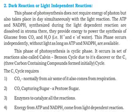The dark reaction phase occurs at the same time as the light-dependent reaction, because it does not need energy of photons directly — plants already captured sunlight in the first phase. The ATP and NADPH2 synthesized during the light-dependent reaction are energy-rich compounds.